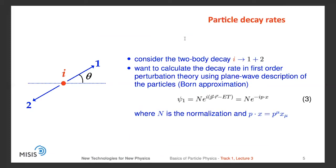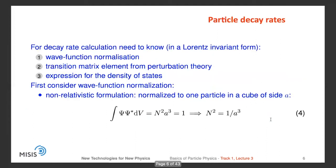Let's consider a two-body decay where initial particle i decays to particles 1 and 2. We would like to calculate the decay rate in first-order perturbation theory using a plane wave description of the particles, or Born approximation. In this case the wave function can be represented as a usual plane wave, where n is the normalization coefficient and the notation p·x corresponds to the four-vector scalar product. For the decay rate calculation we need to know, in Lorentz invariant form, the wave function normalization n, the transition matrix element from perturbation theory, and an expression for the density of states.